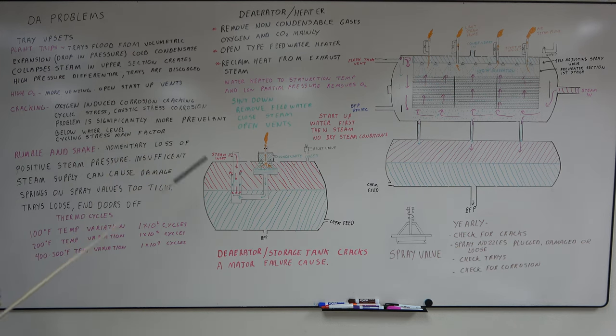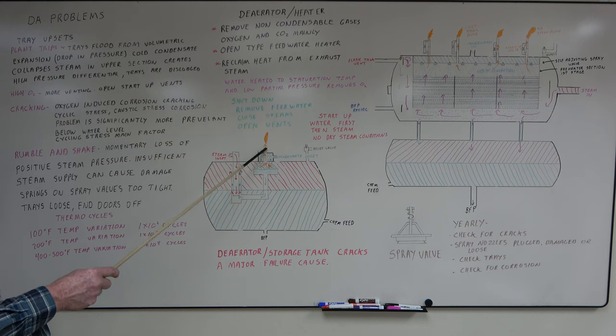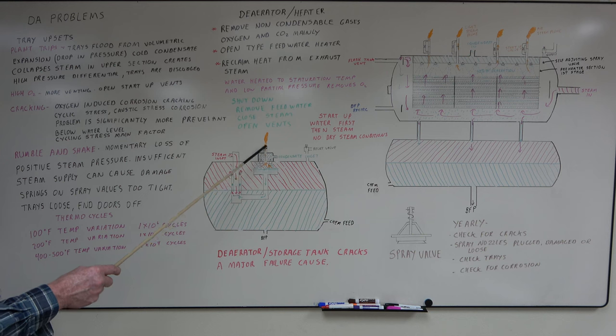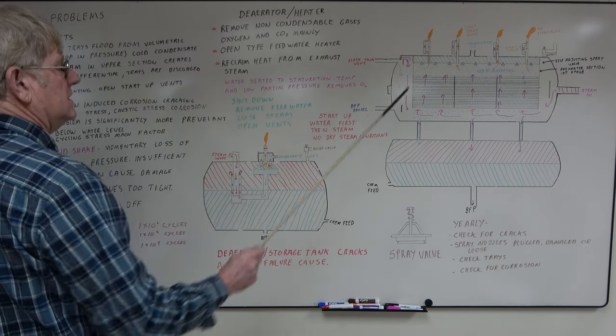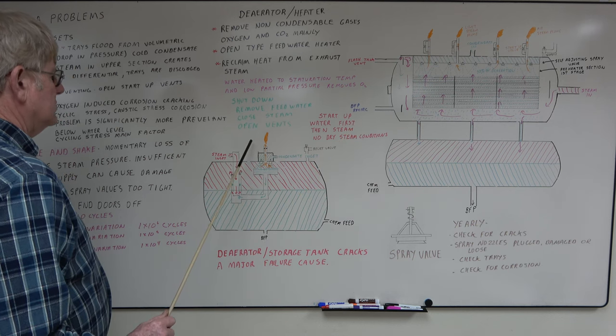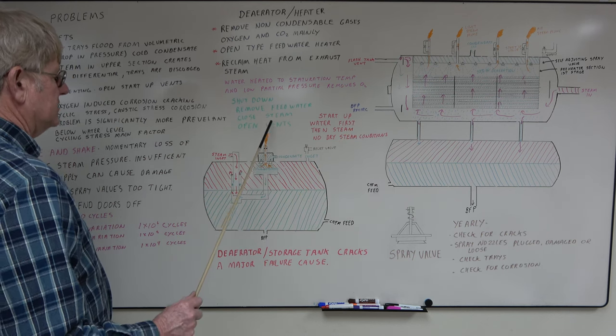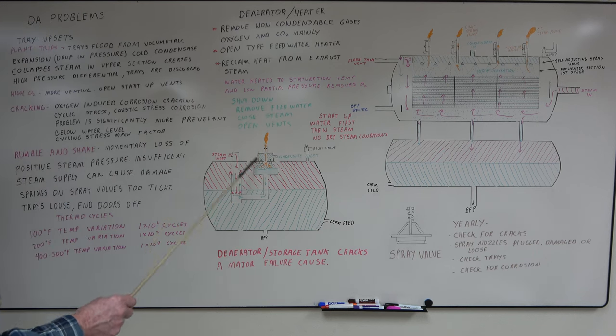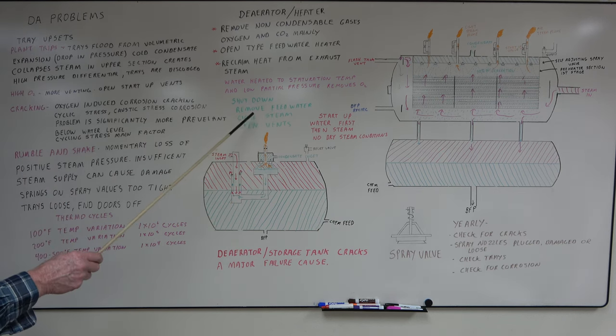High O2. You have high O2 on a deaerator, it's probably not venting correctly. You need to check the steam inlet. Usually they have an orifice on your line coming out of the deaerator. There's also valves like this. It has starter valves. You may have to vent more, but usually the orifice is big enough so you have just this light plume of steam coming out. You don't want it blowing out and you don't want no steam at all.